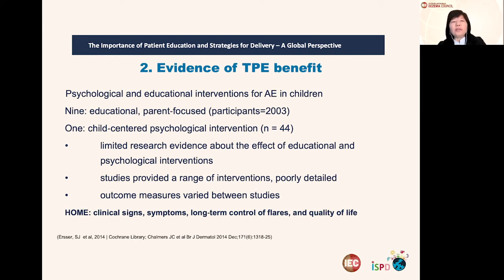A very good review from the Cochrane Library points out that in 2014 there were nine articles regarding educational interventions for atopic eczema in children. In adults we have more, but in children and adolescents it's still limited. This educational approach is parent-focused, and the review involved more than 2,000 patients. The conclusions were that there is still limited research evidence about the effect of educational and psychological interventions, with studies providing a range of interventions but poorly detailed, and outcome measures varied between studies.